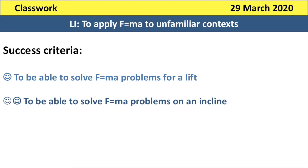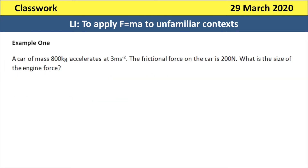Hello and welcome back to another lesson on A-level physics. Today we are going to be concentrating on using the equation force equals mass times acceleration in unfamiliar contexts. As you can see from today's success criteria, those unfamiliar contexts are going to include lift problems or elevator problems and using F equals MA on inclines as well. There will be other examples too, but they are going to be the main focus for success today. There is no real theory for this one, so we are going to dive straight into some example questions.